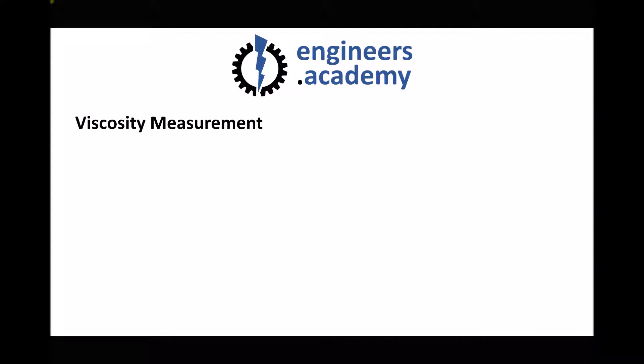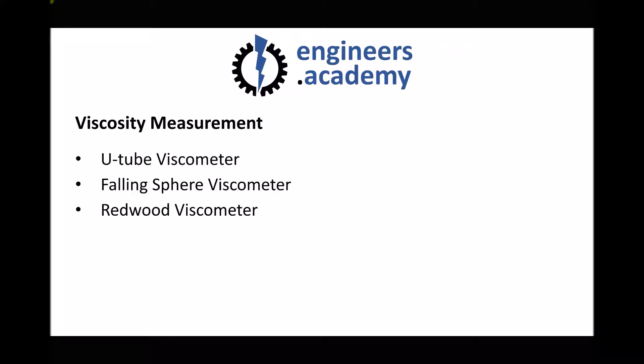Now that we have an understanding of what viscosity is, we can look at some different ways of measuring it. We're going to look at three methods in particular: a U-tube viscometer, also known as an Oswald viscometer; a falling sphere viscometer; and a Redwood viscometer.